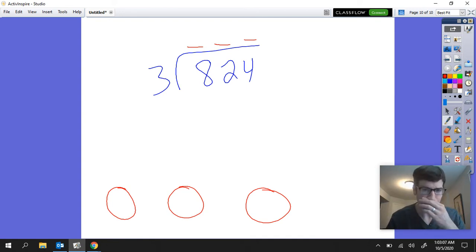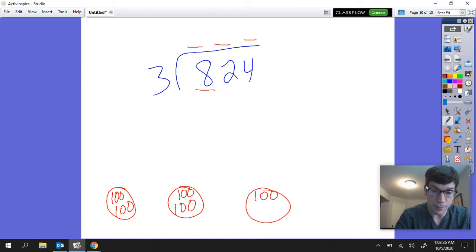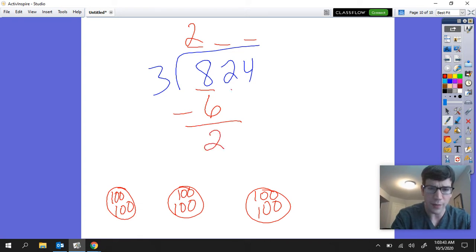Now first, starting off, if I have 800 and I have three groups, that tells me that yeah, I can definitely put 100 into each group, because if I put 100 into each group that would only be 300, which means that I can actually put more than 100 into each group. Because if I put another 100 into each group, that would only be 600. I can't though put a third 100 into each group because that would be 900. So I know I can put 200 into each group. That's going to be 600 that I'm using with 200 left over, and I'm going to bring down my tens.